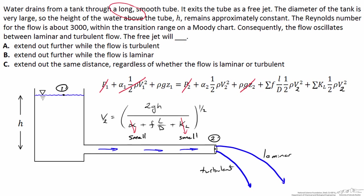What that says is a higher friction factor will reduce the velocity at point two, and a low friction factor would result in a relatively high velocity at point two.